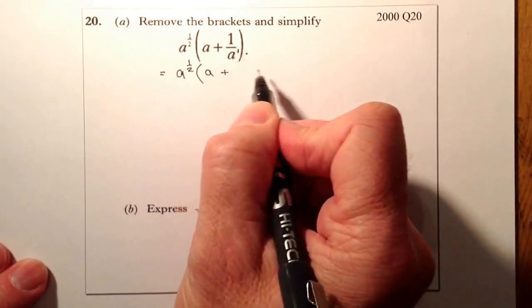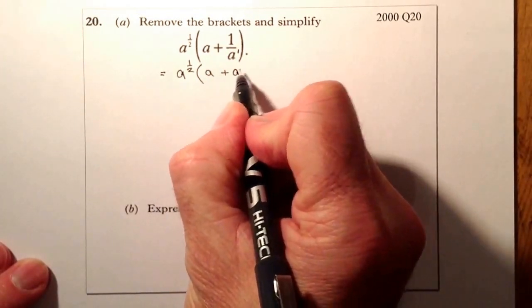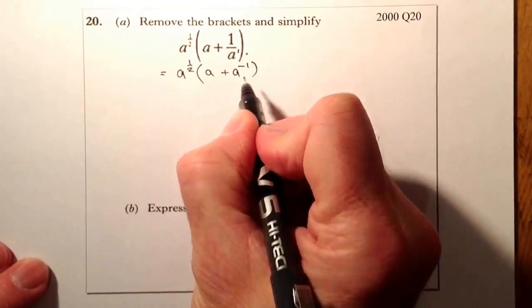because that's a to the power of 1, I'm going to take it to the top line, up to the numerator, and that will be a to the minus 1.